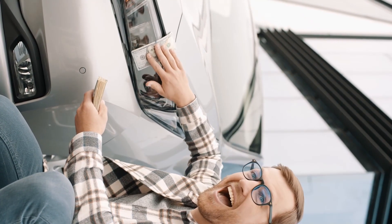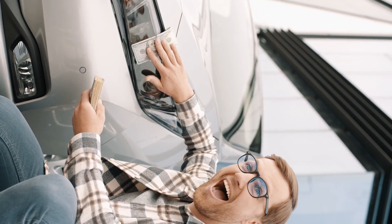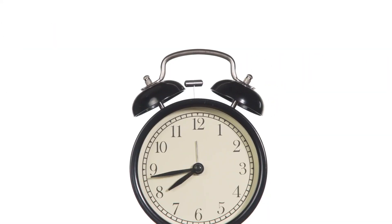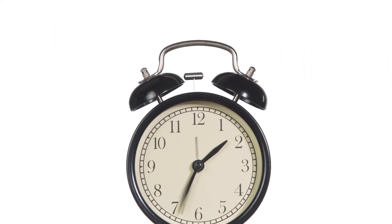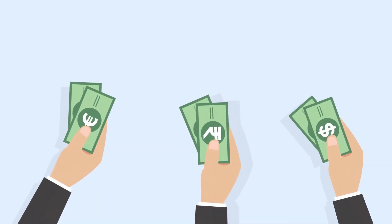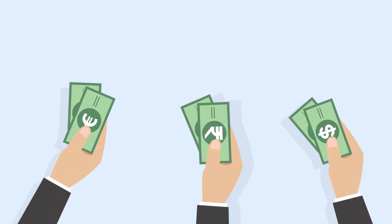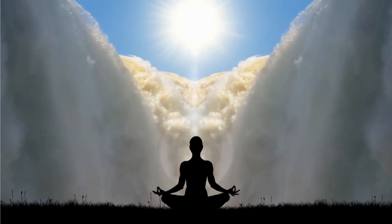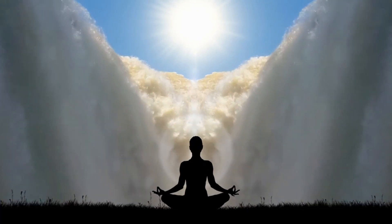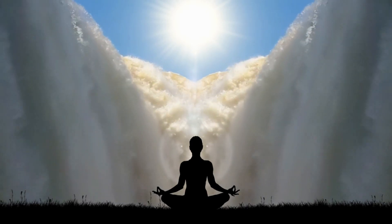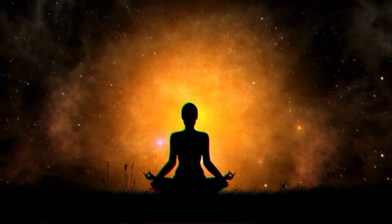Calculating your net worth. Now, let's walk through a step-by-step process to calculate your net worth. Step 1: List your assets. Start by listing all your assets. This includes cash and savings accounts, investments such as stocks, bonds, mutual funds, and retirement accounts like 401k or IRAs.